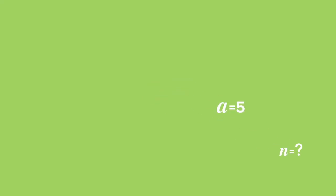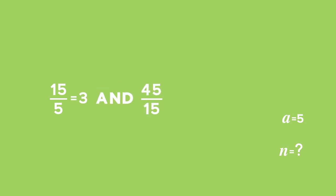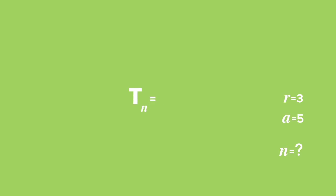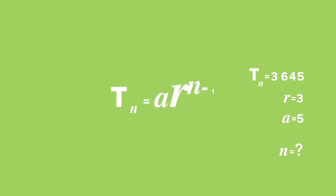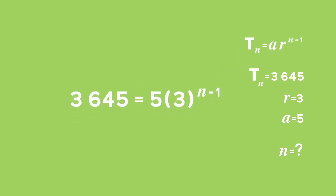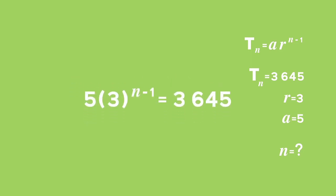In other words, we need to work out the value of n. a equals 5, r equals 15 divided by 5, which is equal to 3, and 45 divided by 15 is equal to 3. So r is equal to 3, and we are given that Tn is equal to 3,645. Use the formula for the general term: Tn equals a times r to the power of n minus 1, and substitute values for Tn, a, and r to work out n. 3,645 equals 5 times 3 to the power of n minus 1.